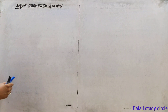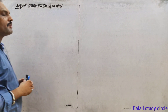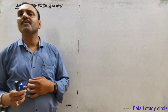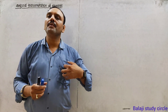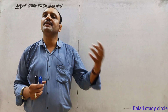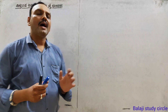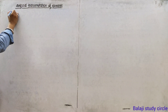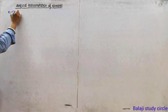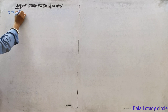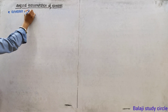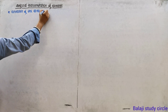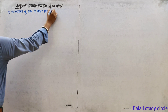Let's discuss artificial transmutation of elements. Artificial transmutation is the conversion of one element into another artificially.